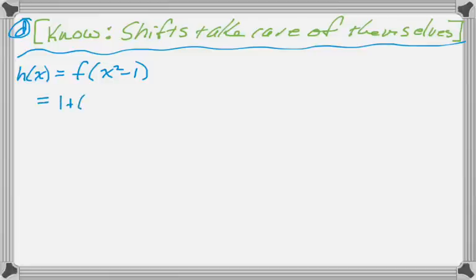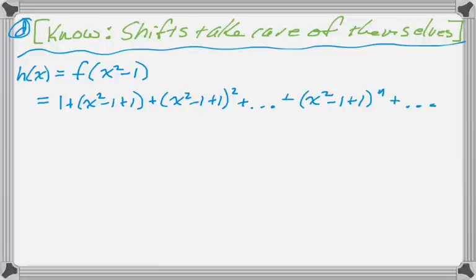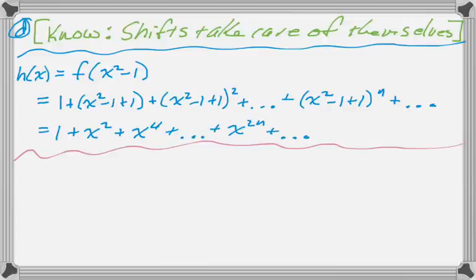So literally, I'm going to go back to the series I was given for f of x and replace every x that I see with the quantity x squared minus 1. So I end up with this, and then here I'm replacing it, and then finally in the nth term I'm replacing it, and then it goes on forever. I can simplify this quite a bit. And you can see that I'm just getting even powers now. Still geometric, though, with a common ratio of x squared in this case.